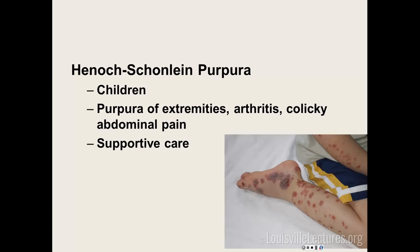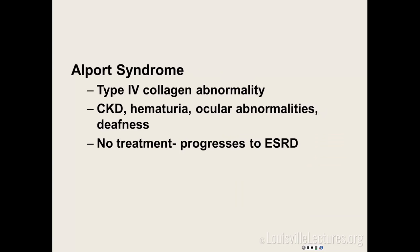Alport syndrome is a type 4 collagen abnormality that presents as CKD. There will be a family history of people on dialysis. Clues include deafness in the family or the patient, and eye abnormalities such as lens or corneal issues. Unfortunately there is no treatment — these people end up on dialysis in their 20s, but they can get transplanted.